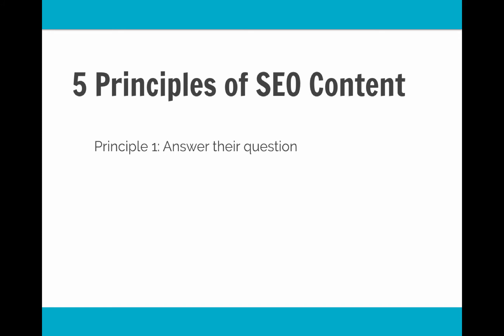Answering their questions has a couple other elements to it, which brings us to principle two. You can't just answer the question — you have to provide the best answer to the question. Google is a question-answering machine. They want to provide the best answer, and they have their ways of determining what answers it well. We don't totally know what those are, so you have to decide what it means to provide the best answer and how to create an article that does that.